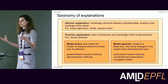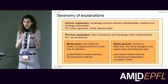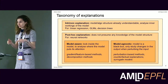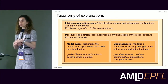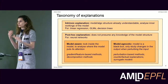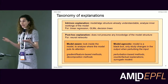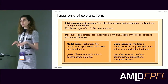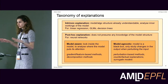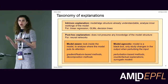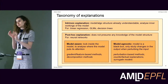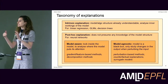Among those post hoc explanations, you have model-aware explainability methods that look inside the model to extract information, analyzing inner parameters such as gradients or feature activation maps. You also have model-agnostic explainability methods that consider the model as a black box and infer the importance of graph entities by slightly perturbing the input and looking at changes in the output.